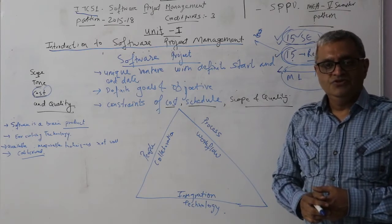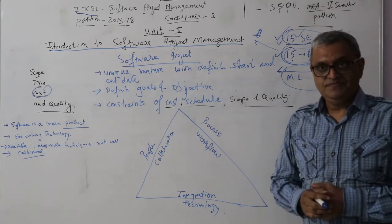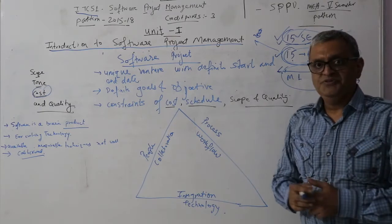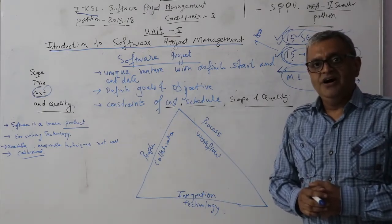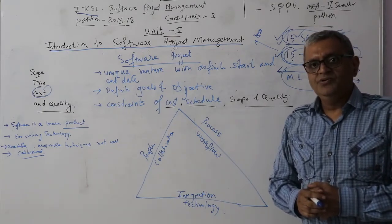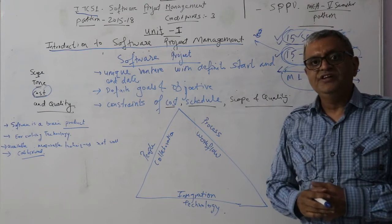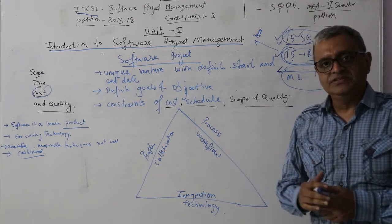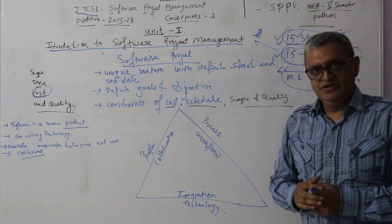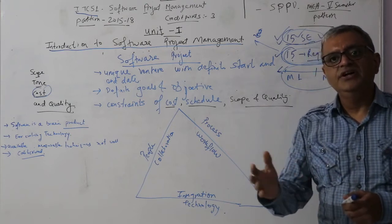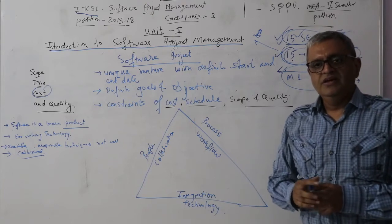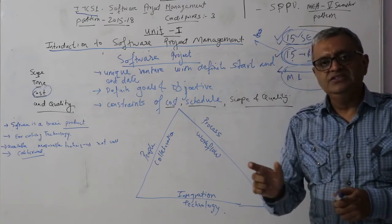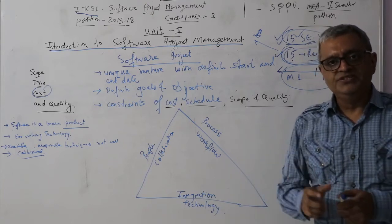The second option: look at certain activities that can be reduced. For example, can I decrease the scope of testing?